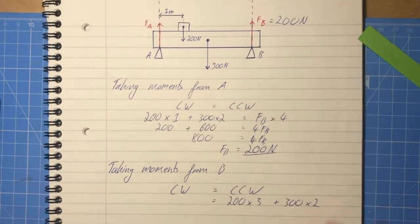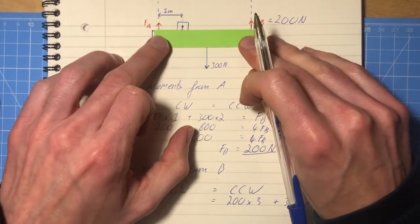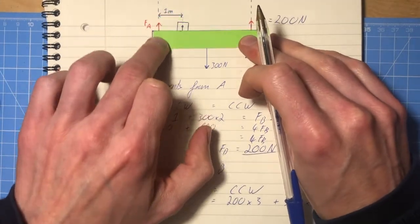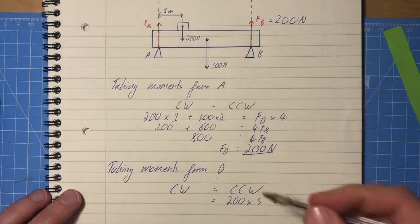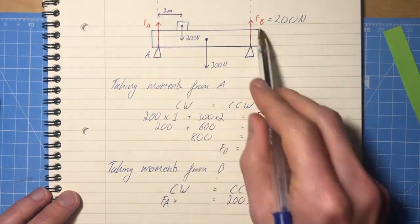And then let's do the clockwise. So the only clockwise moment we have here is FA. It's pushing the beam up this way, so that's clockwise. So we have FA times, it's 4 meters from B.